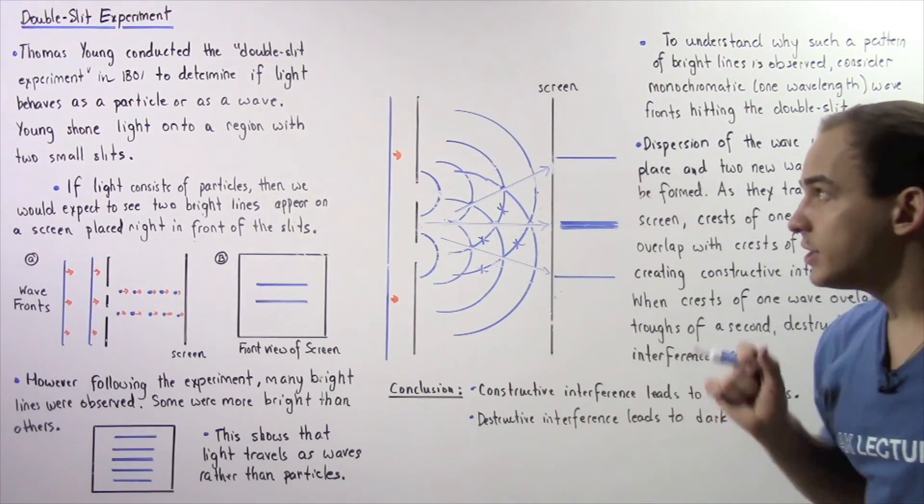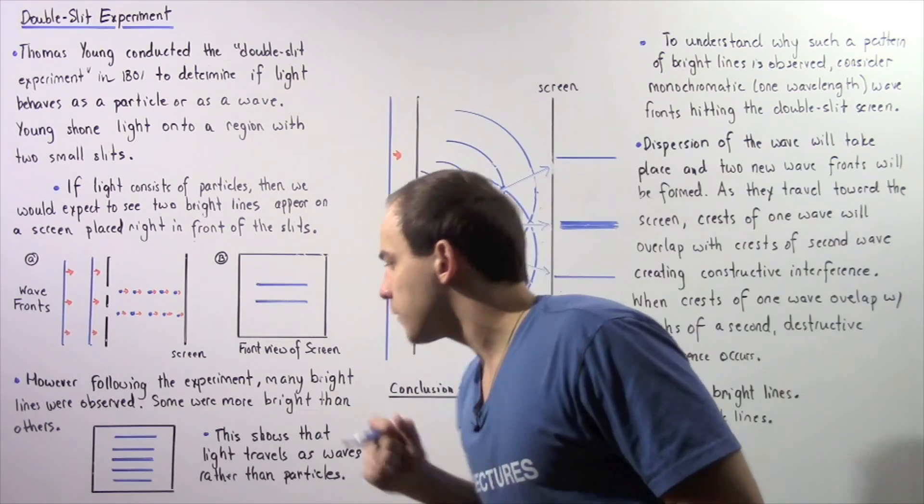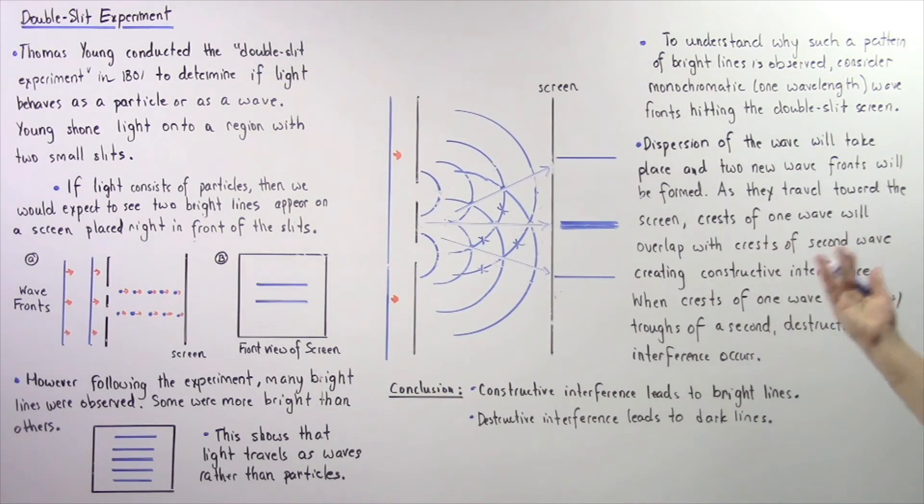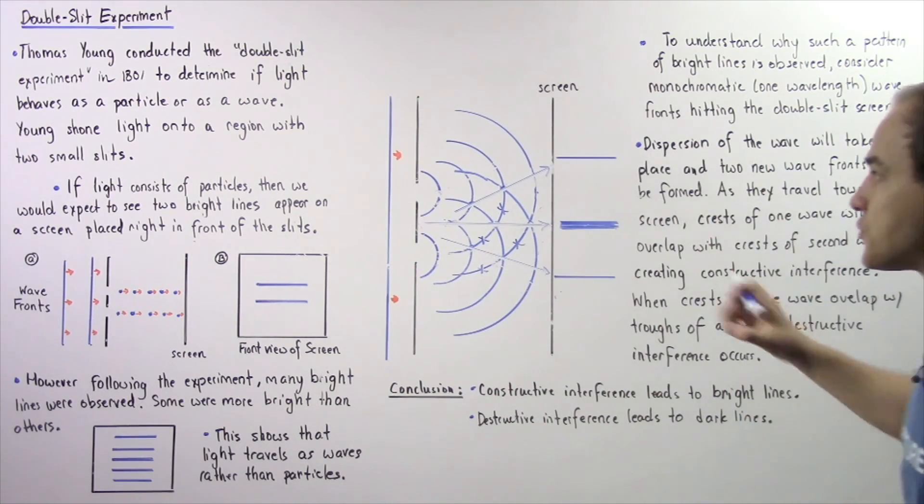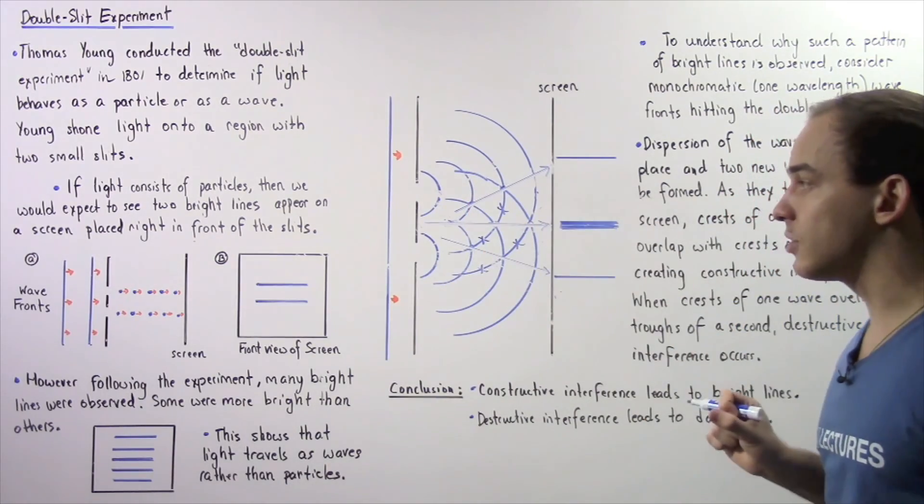So once again, we conclude that the reason that this is observed is because of constructive and destructive interference of these wave fronts. So basically, in this particular case, the light travels as waves and not as particles.